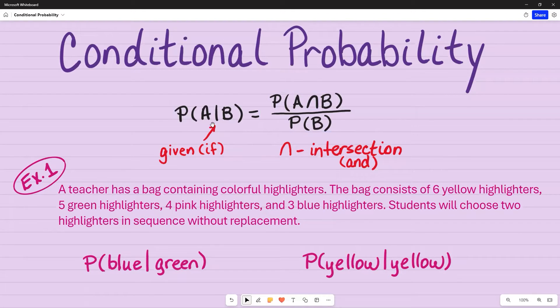So when you're looking at this, this notation here represents the word given or if in a word problem. The part that's after it is always going to be your denominator. The numerator is going to be a combination of the two. So when you see that symbol intersection, that means the word and.